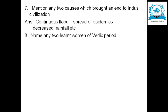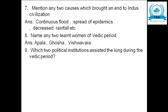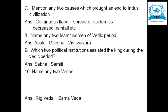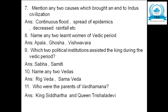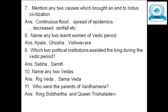Name any two learned women of the Vedic period — Apala, Gosha, Vishwavara, etc. Which two political institutions assisted the king during the Vedic period? Sabha and Samithi. Name any two Vedas — Rig Veda, Sama Veda, Yajur Veda — any two you can write. Who were the parents of Vardhamana? King Siddhartha and Queen Trishala Devi.